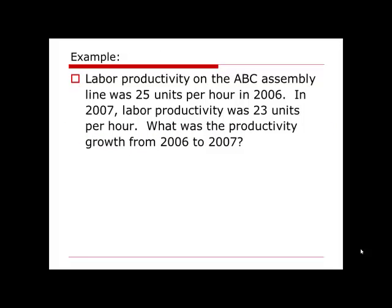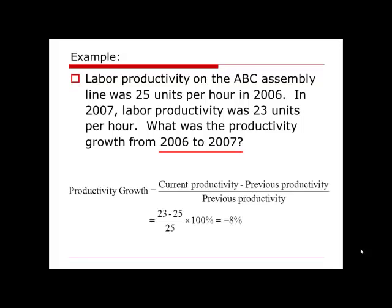First example: the labor productivity on the ABC assembly line was 25 units per hour in 2006. In 2007, labor productivity was 23 units per hour. What was the productivity growth from 2006 to 2007? We have two years, 2006 and 2007. The more recent time is the current time, so 2006 is the previous year and 2007 is the current year. We have the corresponding two productivities and can substitute them into the formula to get the productivity growth number.